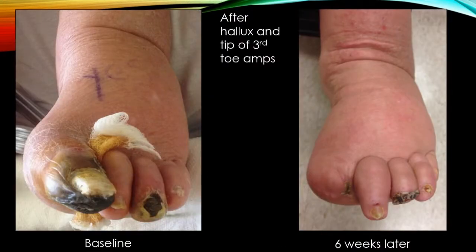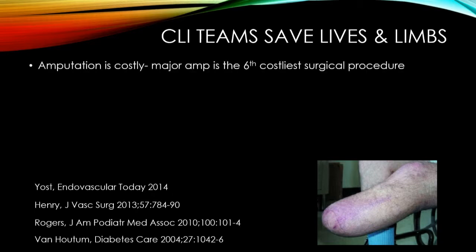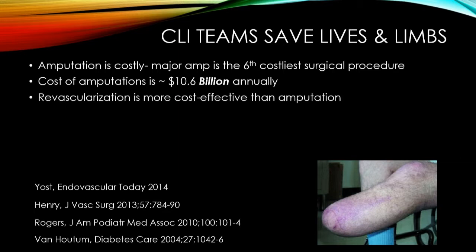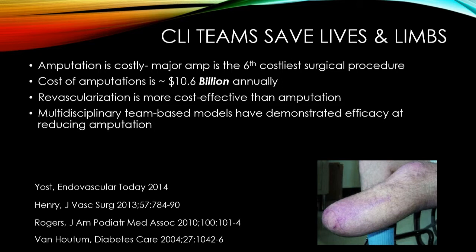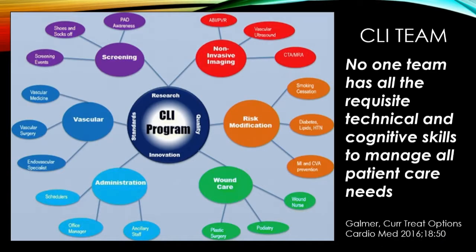More importantly, after our podiatry colleagues took him to the OR to remove those areas of gangrene, he was able to — six weeks later — have successful healing of his wounds and successful limb salvage. There's no question that CLI teams save lives and limbs. We have to acknowledge that amputation is incredibly costly, not only in terms of the psychological damage to patients and their families, but the economic costs are really staggering — $10.6 billion annually. Revascularization is more cost-effective than amputation, and team-based models have demonstrated efficacy at reducing amputations, with several centers reporting major reductions of over 72% after instituting a formal care process. So it takes a village, and that's certainly true in CLI.